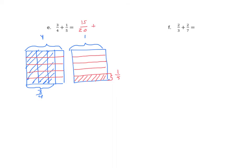Let's take care of our second addend. We're going to partition it using three vertical lines, partitioning it into four equal parts. We know that our denominator once again is twenty. Looking at the number shaded — four out of twenty. We can now add our numerators: fifteen plus four is nineteen, and the denominator remains twenty. We can't simplify this one either.